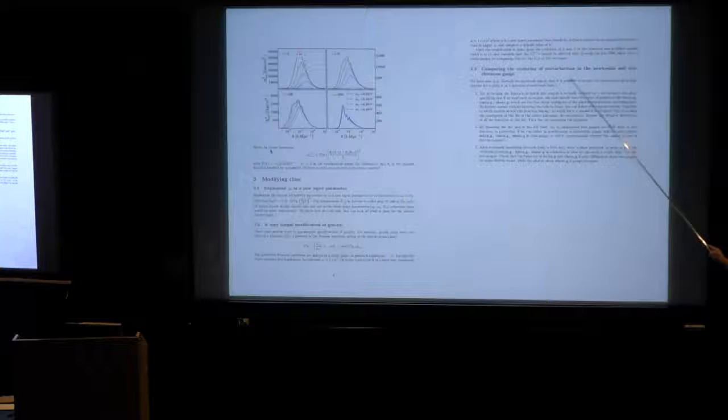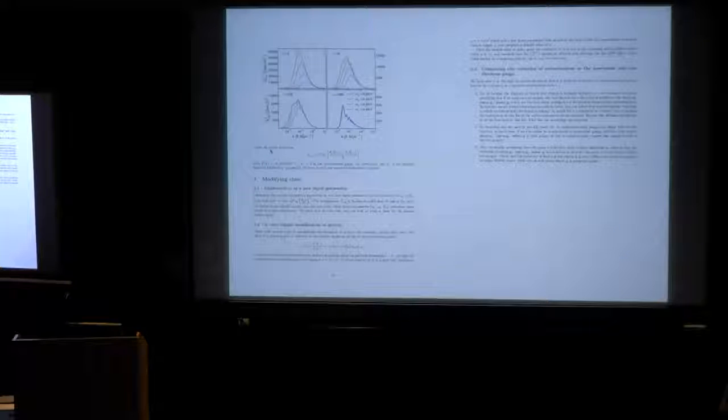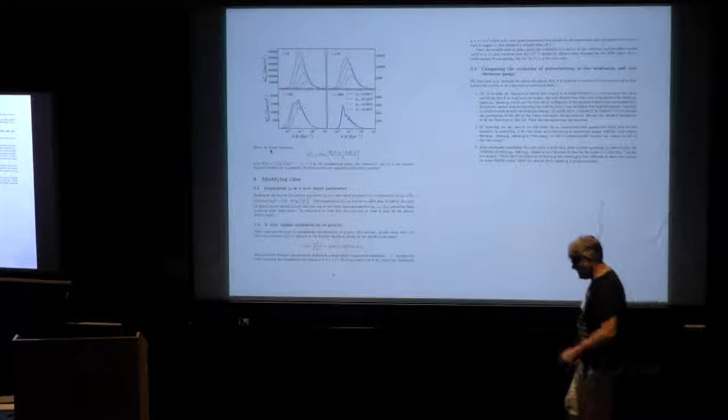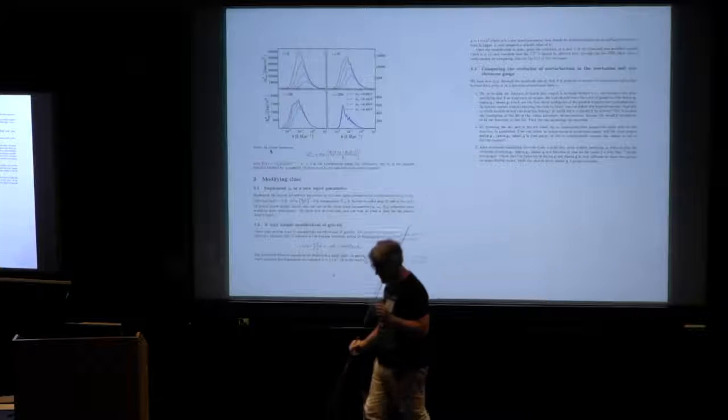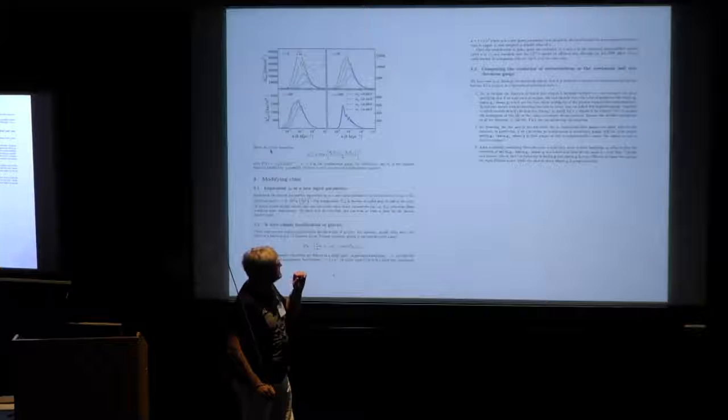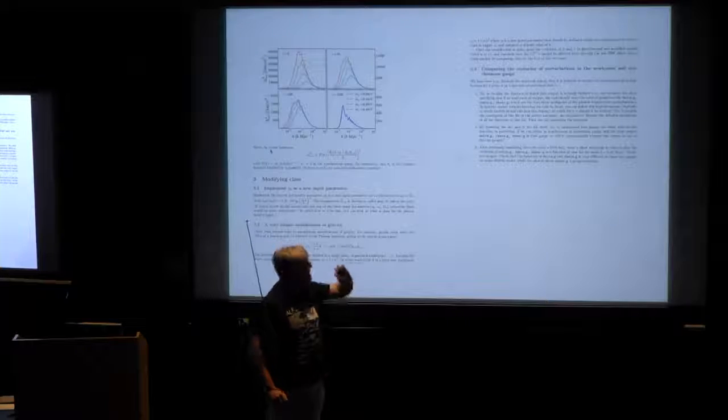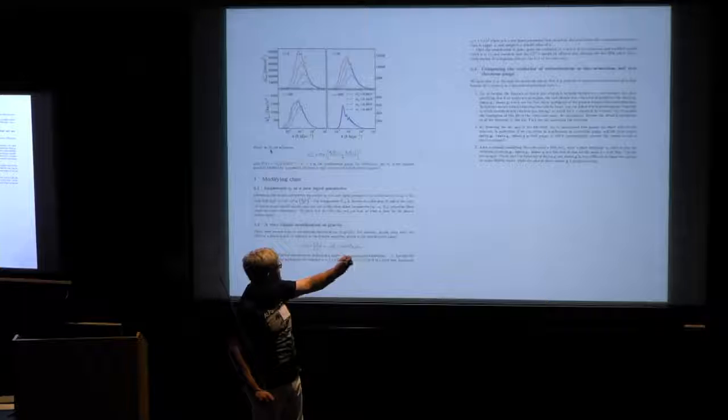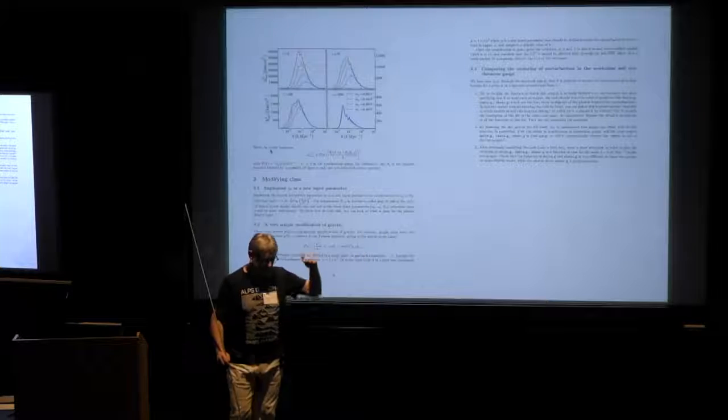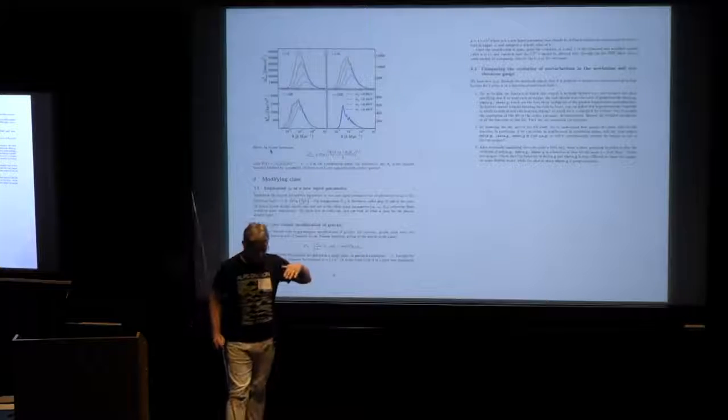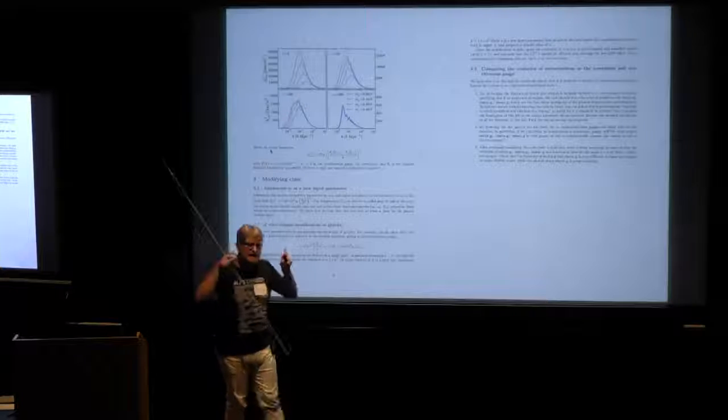The third one is to make a comparison between perturbations in the Newtonian and synchronous gauge. We have seen yesterday that you can output the evolution of quantities of perturbations as a function of time. And the code has a list of predefined values for this.